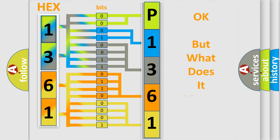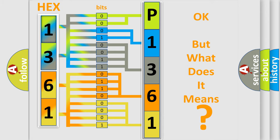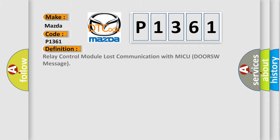The number itself does not make sense if we cannot assign information about what it actually expresses. So, what does the diagnostic trouble code P1361 interpret specifically for Mazda? The basic definition is: Relay control module lost communication with MICU DORSW message.